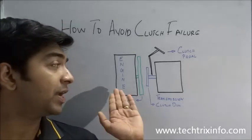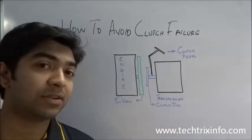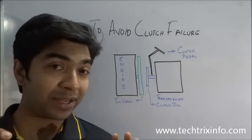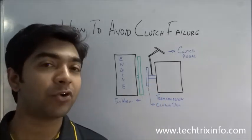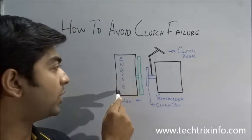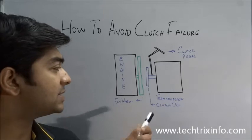So first we can identify where the clutch is located and what it exactly does and why the clutch failures are happening and how we can reduce or avoid such failures. So here we have the engine and this is the flywheel.